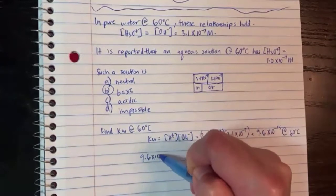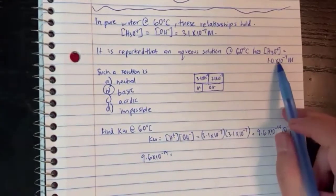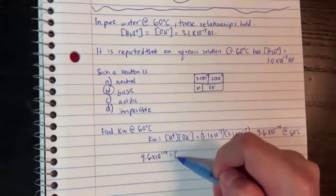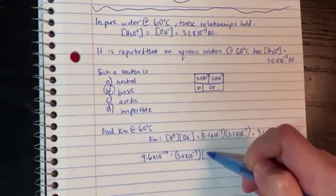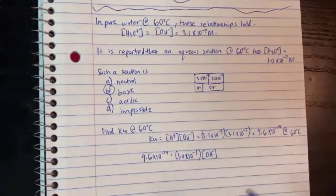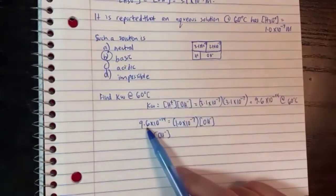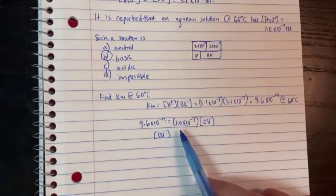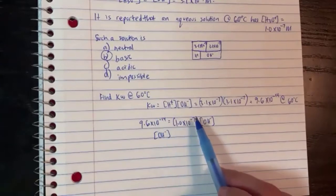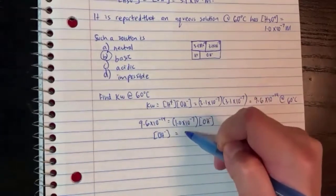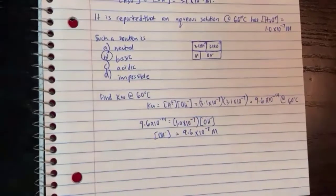Once you know KW is 9.6×10⁻¹⁴, we set it equal to H times OH. H is 1.0×10⁻⁷, so OH equals 9.6×10⁻¹⁴ divided by 1.0×10⁻⁷, which gives 9.6×10⁻⁷ molarity. You could have done the math, but if the question didn't ask for it, you could just look and compare.